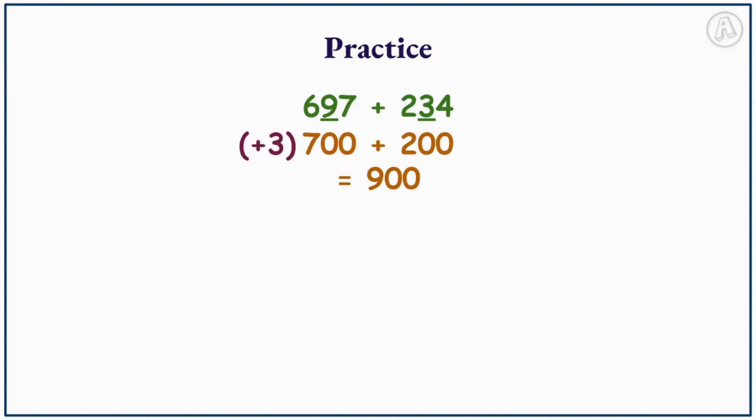Note we add 3 to 697 to get to 700, and we minus 34 from 234 to get to 200. So now we need to use our total error to adjust our answer in order to find our actual answer.